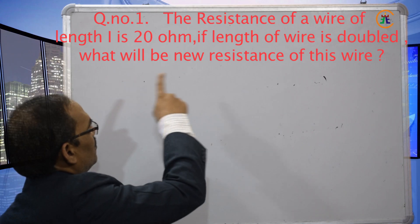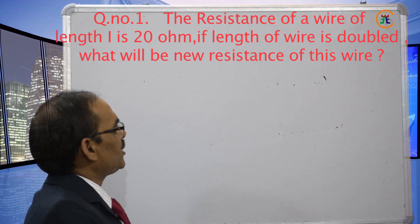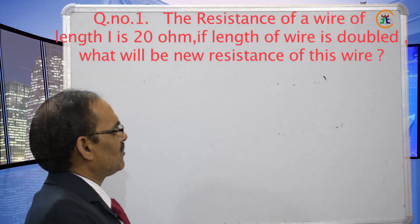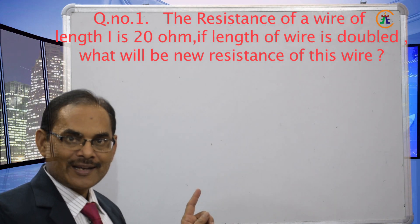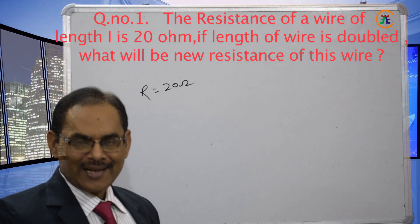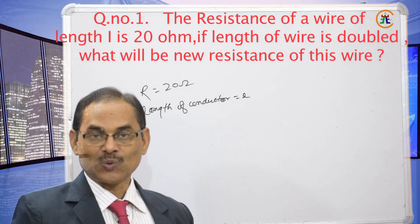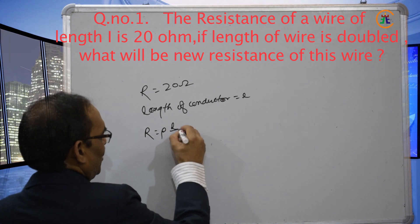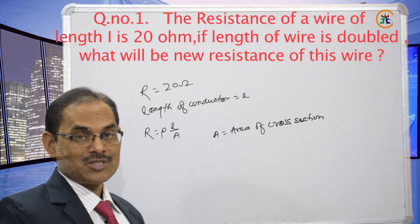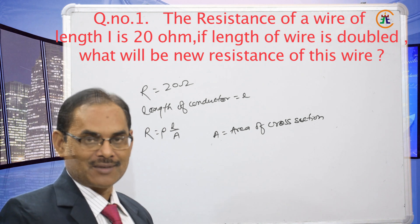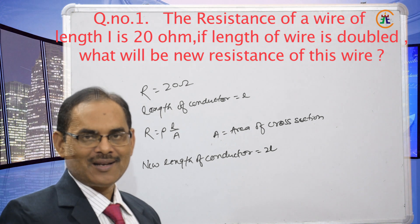Question 1: The resistance of a wire of length l is 20 ohms. If the length of the wire is doubled, what will be the new resistance? Here R = 20Ω, length is l, and resistivity is ρ, so R = ρl/A where A is the area of cross-section. If the length is doubled, the new length l' = 2l.